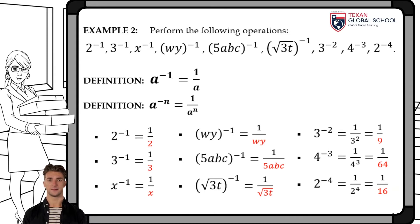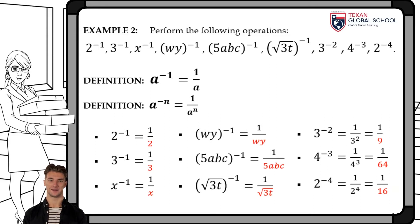Let's look at another example. We will perform the operations given. 2 to the negative 1 is one-half using the definition. Similarly, 3 to the negative 1 is one-third. x to the negative 1 is 1 over x. The product wy to the negative 1 equals 1 over wy. The product 5abc raised to the negative 1 equals 1 over 5abc. The square root of 3t raised to the negative 1 is equal to 1 over the square root of 3t.